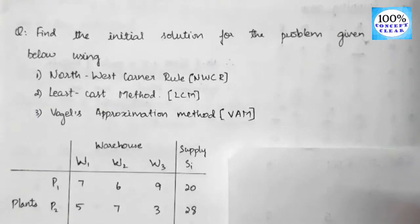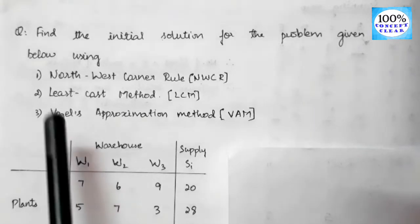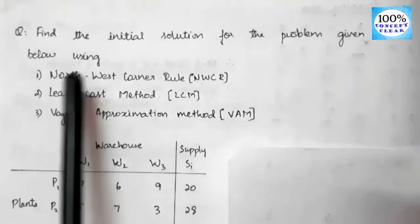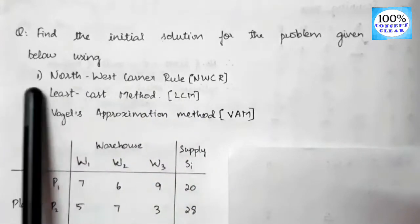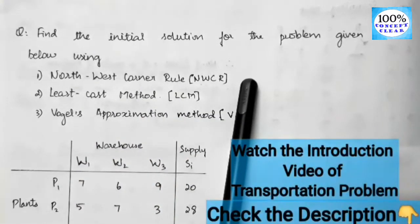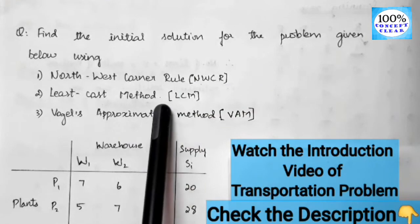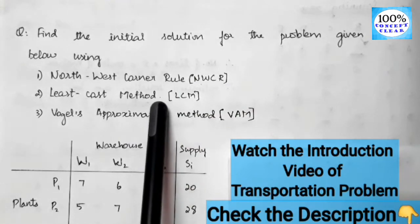Hi all, welcome to my channel 100% Concept Clear. In this video, we are going to find out the initial solution for the transportation problem using the first method, i.e. the North West Corner Rule method. If anybody wants to watch this same video in Tamil, the link is available in the description box.